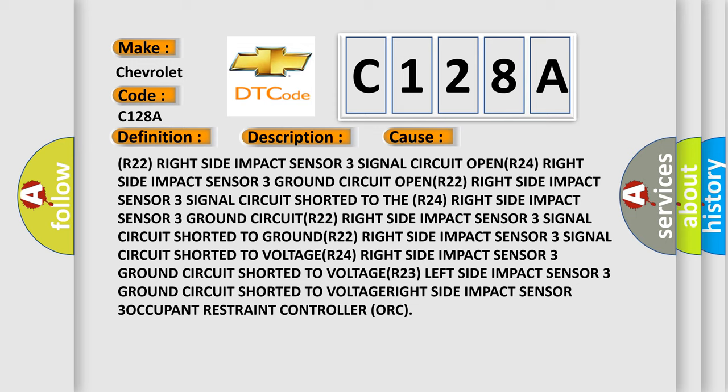R22 right side impact sensor 3 signal circuit shorted to voltage, R24 right side impact sensor 3 ground circuit shorted to voltage, R23 left side impact sensor 3 ground circuit shorted to voltage, right side impact sensor 3 occupant restraint controller ORC. The airbag reset website aims to provide information in 52 languages.